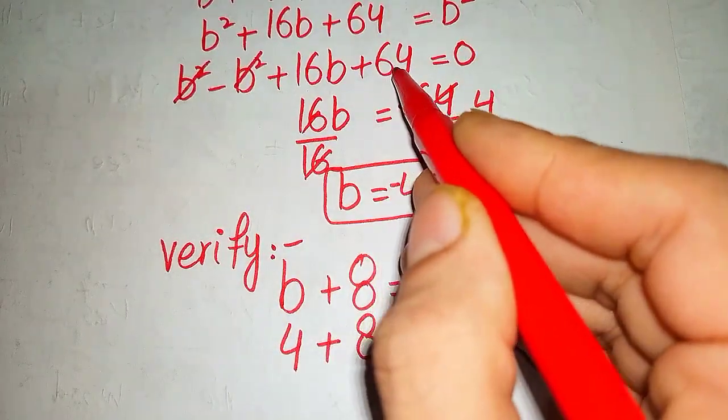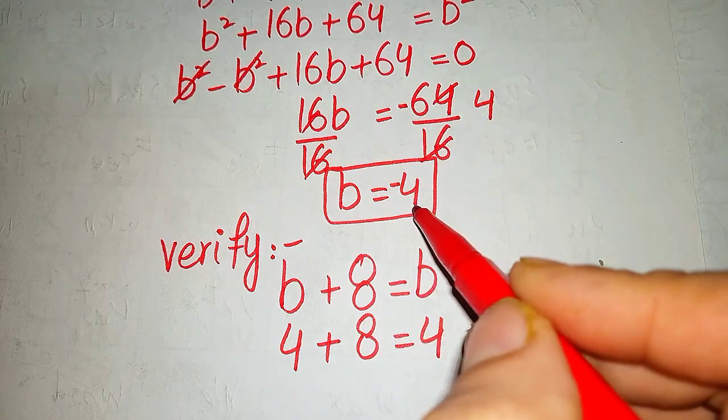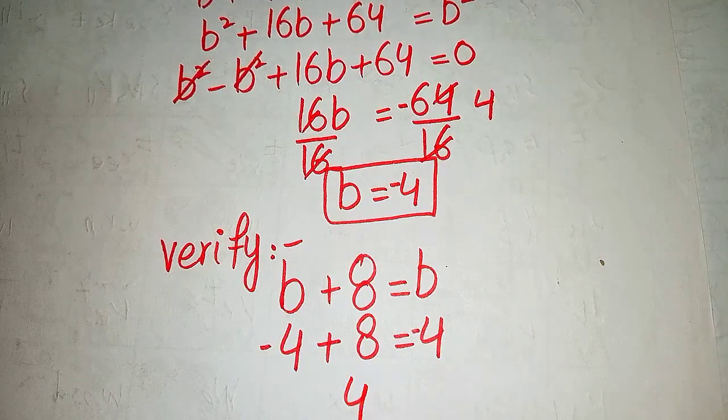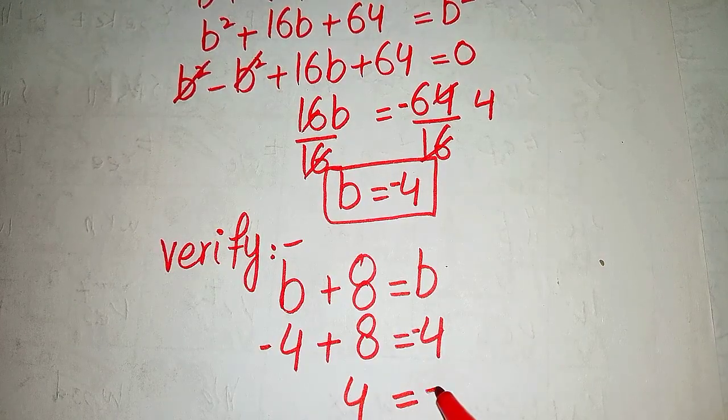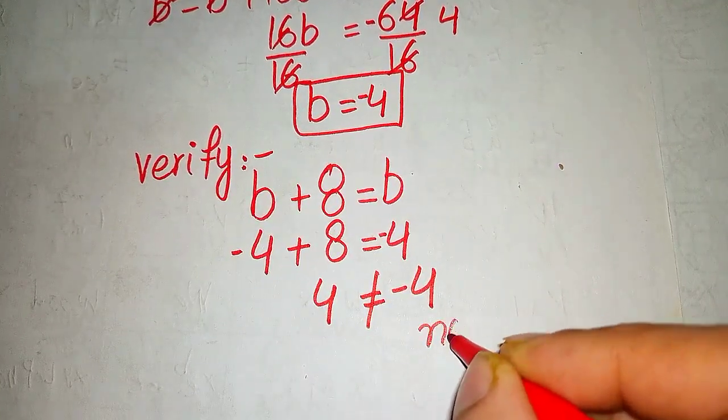Sorry, this minus 64 when goes to the right side would become negative and we have value of b negative 4. Verify: b plus 8 equals b becomes negative 4 plus 8 equals negative 4. 4 does not equal negative 4, so we can say that it's not possible.